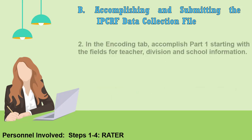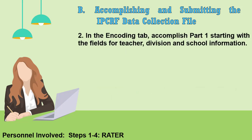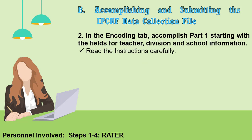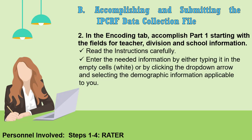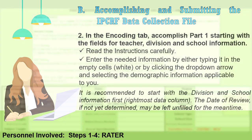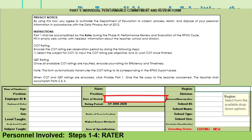Step 2: In the Encoding tab, accomplish Part 1 starting with the fields for teacher, division, and school information. Read the instructions carefully. Enter the needed information by either typing it in the empty cells or by clicking the drop-down arrow and selecting the demographic information applicable to you. It is recommended to start with the division and school information first, in the rightmost data column. The date of review, if not yet determined, may be left unfilled for the meantime.